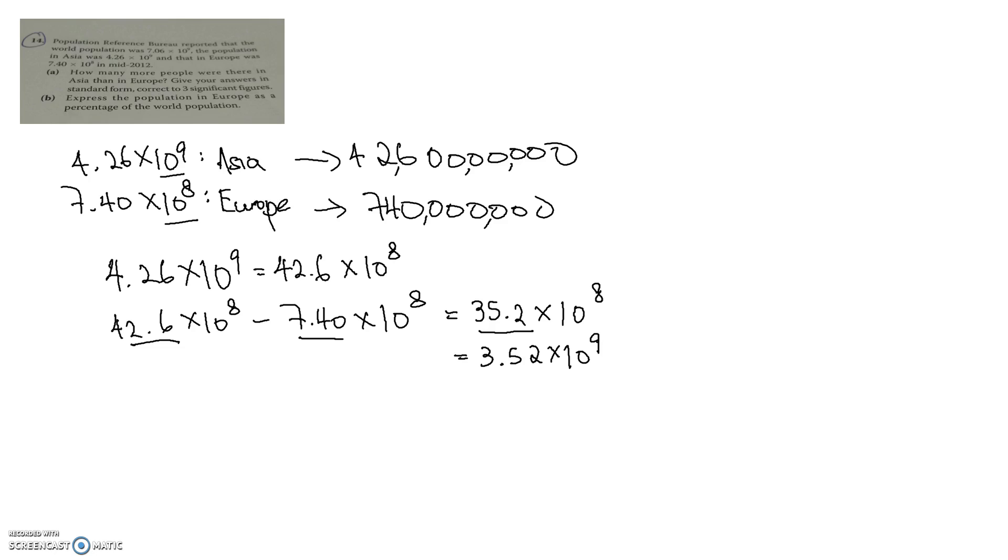This is for question 14a. It will be okay if you did the opposite for the population. That means if you used the population in Europe instead of 7.40 times 10 to the power of 8, you made it 0.74 times 10 to the power of 9 and you deduct 0.74 from 4.26, you will get the answer. Don't forget your statement: There were 3.52 times 10 to the power of 9 more people in Asia. That is how we do question A.